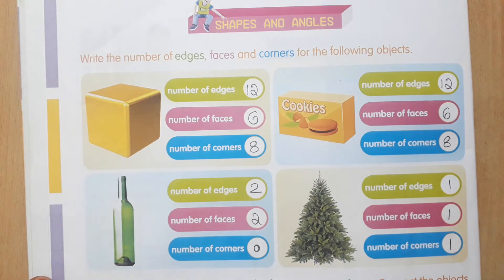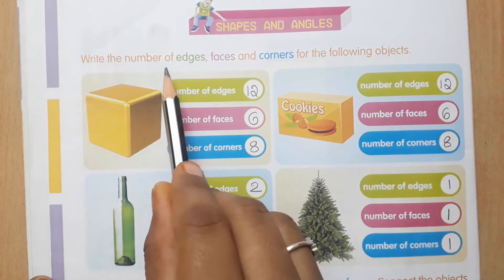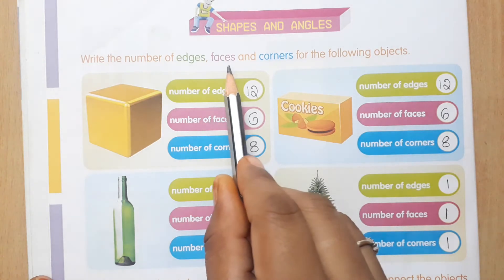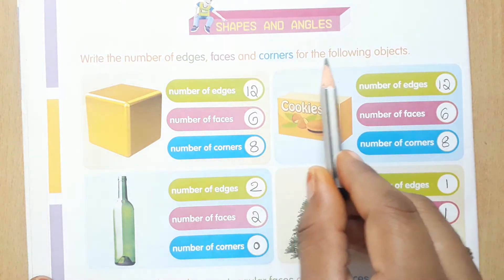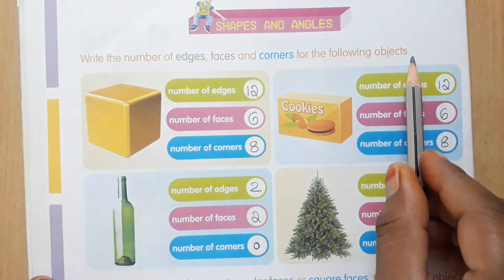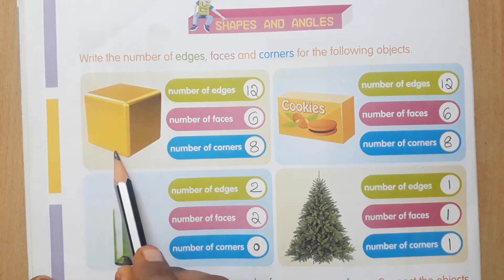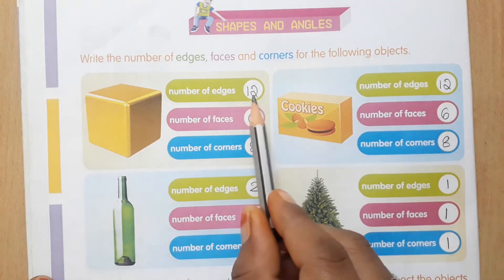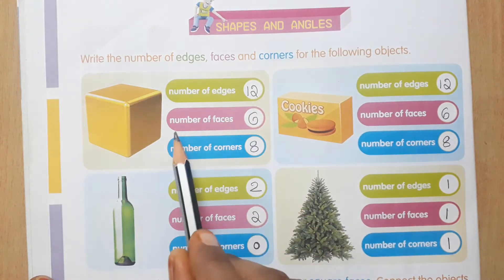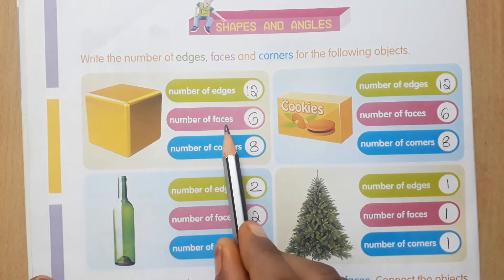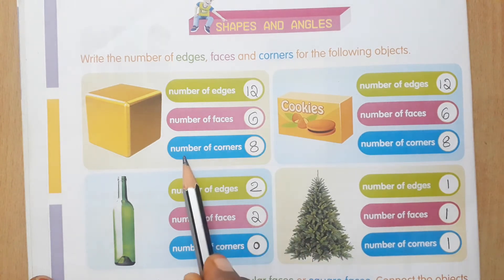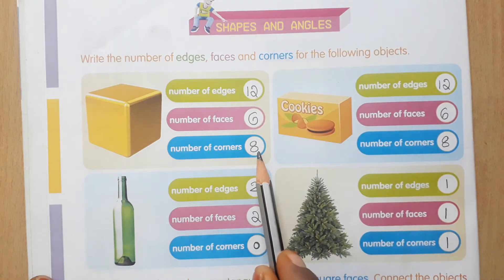Shapes and Angles is the first chapter. Write the number of edges, faces and corners of the following objects. It looks like a cube. So the number of edges in a cube is 12 edges. Number of faces: 6. Number of corners: 8.